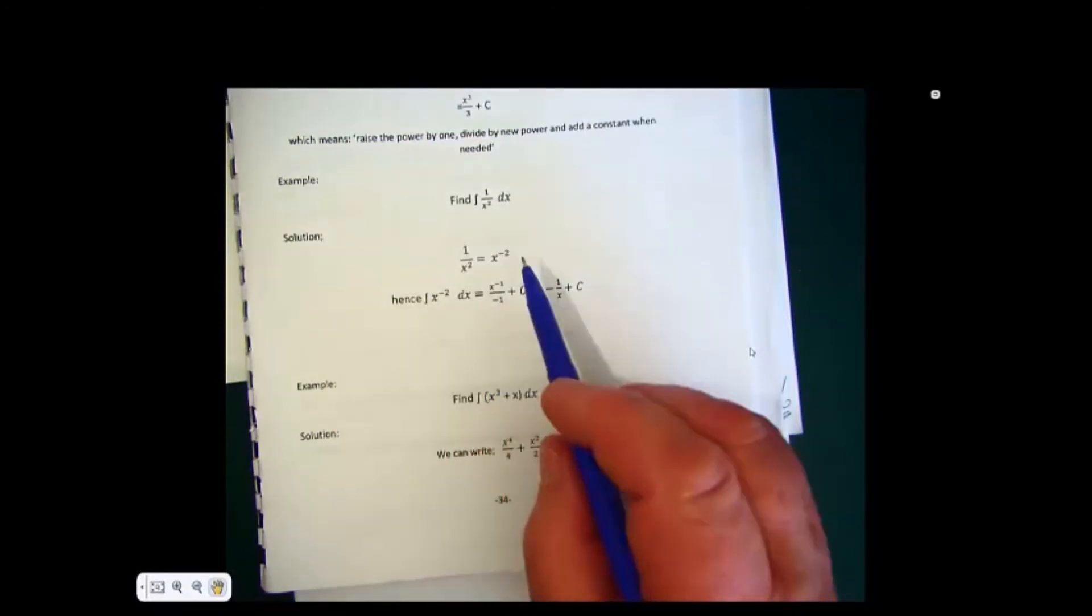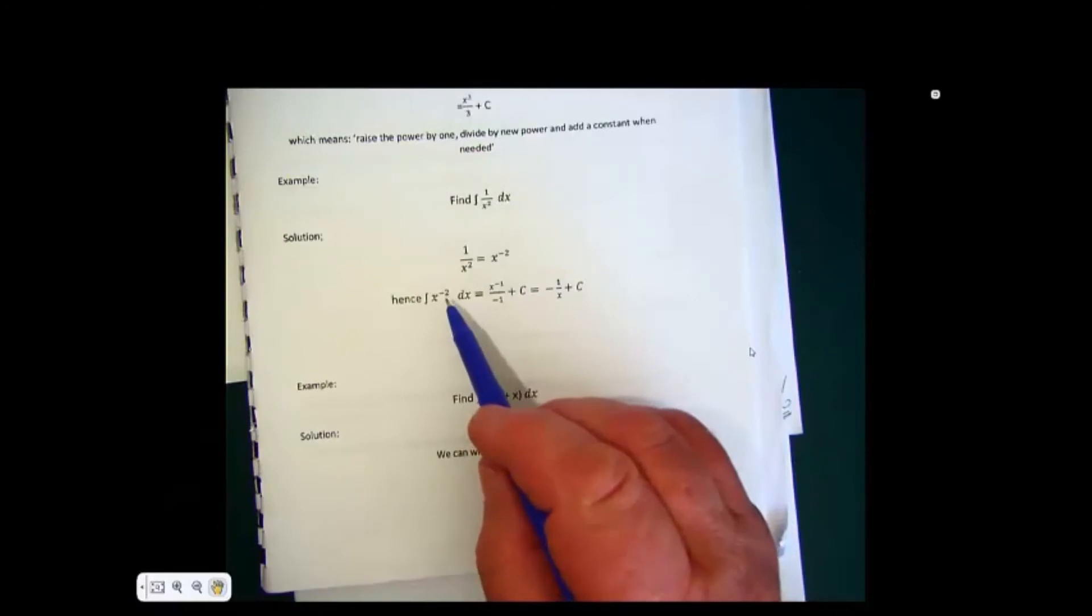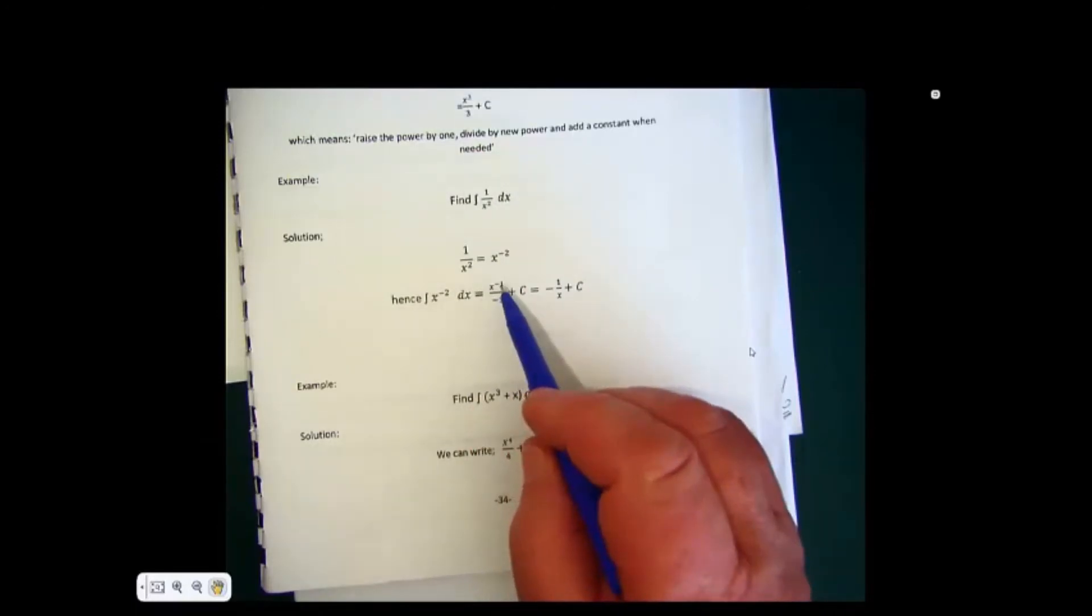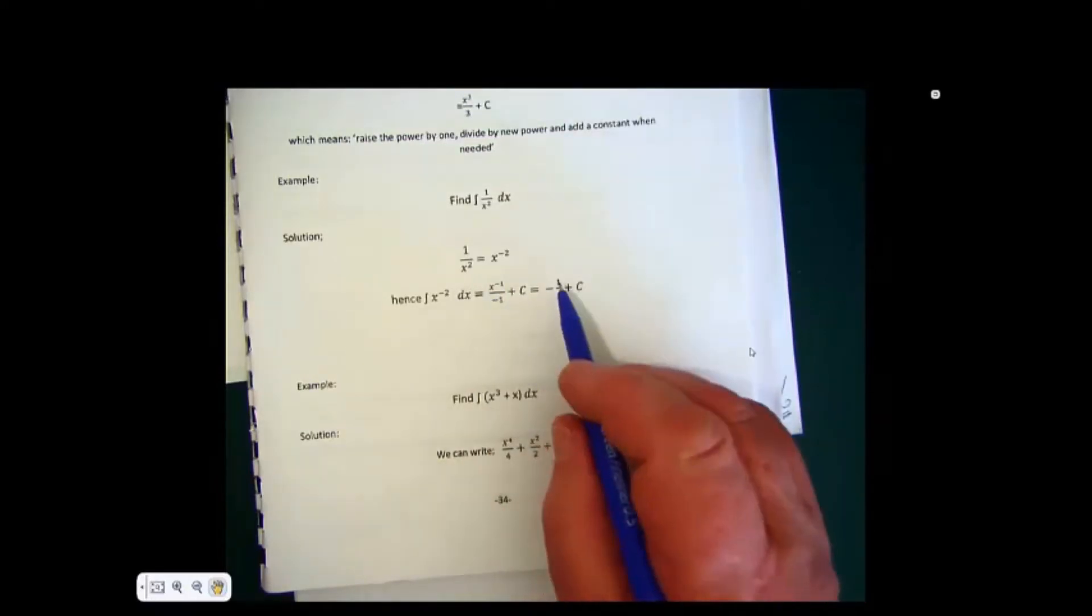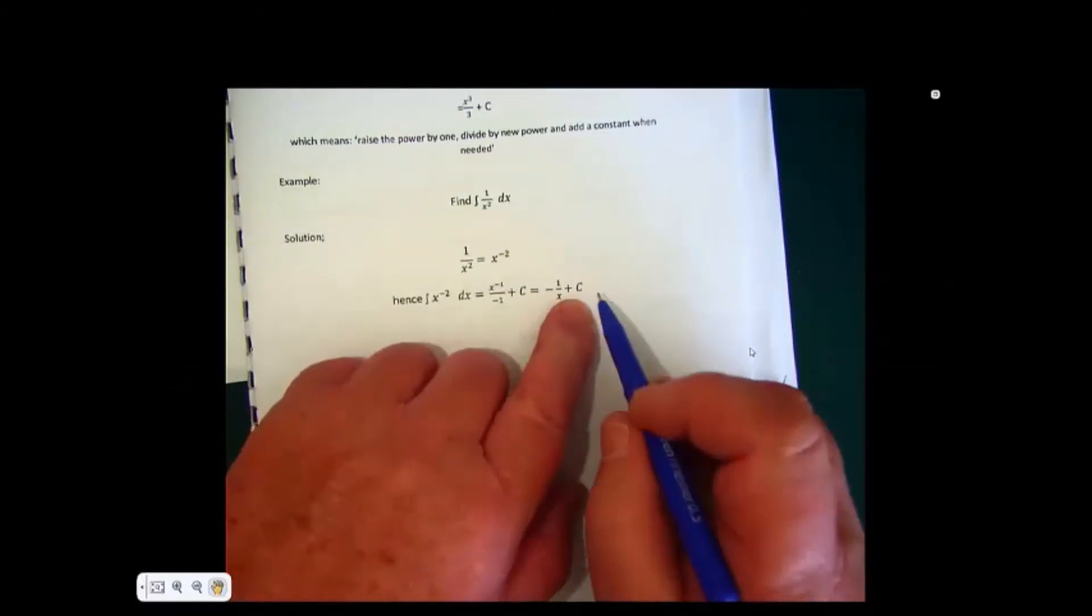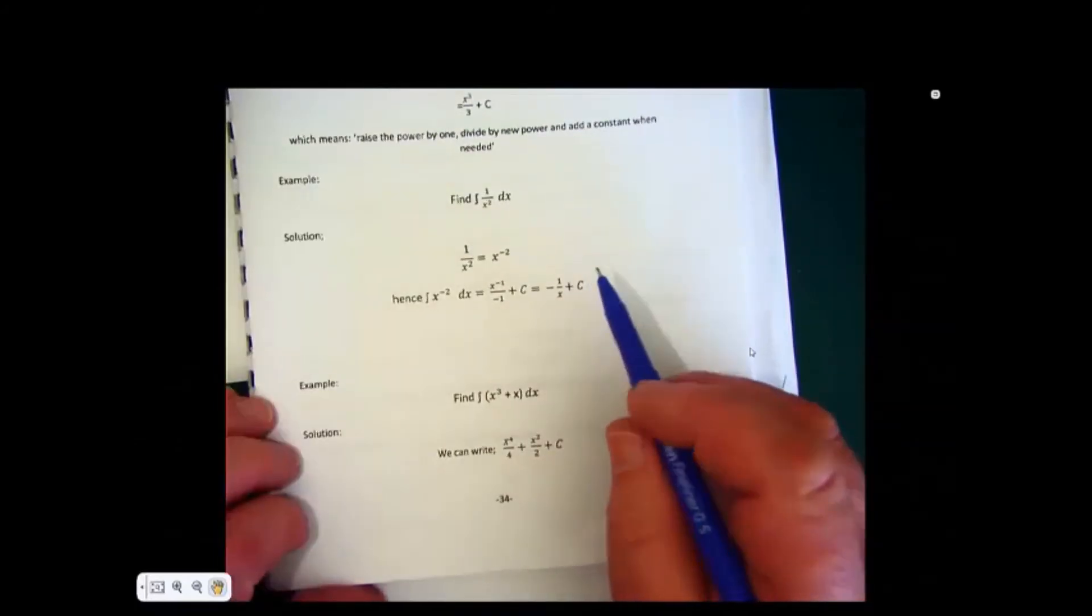We have to rearrange this, remembering that 1 over x squared is the same as x to the minus 2. We'll raise the power by 1, minus 2 plus 1 is minus 1. You must be good with your negative numbers. Divide by the power, so when you integrate this, it becomes minus 1 over x plus the c.